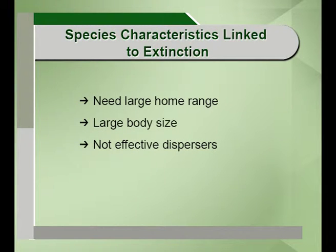There are different species characteristics which are linked to extinction. Number one: species that need a large home range. Species which need a very large area for foraging and feeding — if that area is reduced, they are more prone to extinction. Then, animal species with large body size: large-bodied animals require large amounts of food, have lower population growth rates, are less productive, are more prone to human hunting, and also compete with humans in wild game. These species are more linked to extinction.